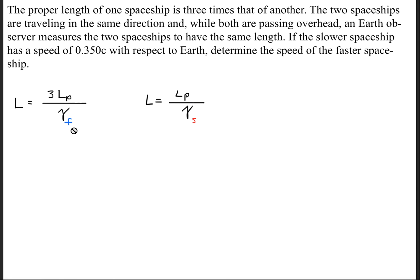So the subscript F is simply the fast spaceship, and the subscript S is the slower spaceship. Now, how did I go about determining this? What was my logical reasoning behind this? So this question is stating how one is going to be 3 times longer than the other. So what that means is that one of the spaceships is very huge.